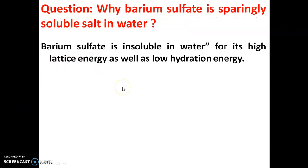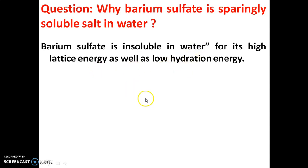Next question: Why is barium sulphate a sparingly soluble salt in water? Barium sulphate is insoluble in water because it has high lattice energy compared to its hydration energy. It has high lattice energy and low hydration energy. For a substance to be soluble, it must have high hydration energy compared to lattice energy. In the case of barium sulphate, high lattice energy compared to hydration energy makes it insoluble in water, hence it is called a sparingly soluble salt.